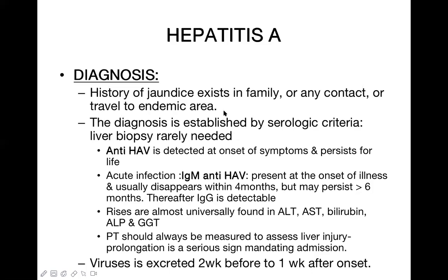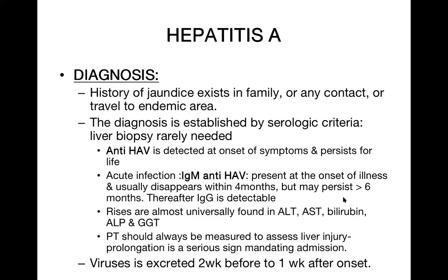Among serological criteria, we detect anti-hepatitis A virus antibody. For acute infection, we go for IgM anti-hepatitis A virus antibody. It is present at the onset of illness, usually disappears within four months, but may persist more than six months. Later, IgG replaces IgM. In any acute infection, IgM is formed first, then IgG replaces it — here IgM gives us the diagnosis.